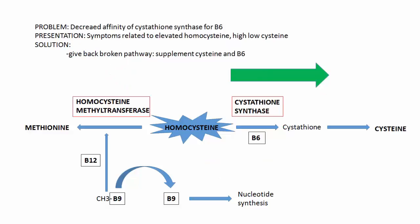In reality, the most common way this pathway is disrupted is not by lacking cystathionine synthase entirely, but by having a less efficient enzyme. While this is most common in the real world, it's actually the least common on boards because it's more nuanced. In this case, the enzyme just has less affinity for vitamin B6 so it doesn't work as efficiently, and the way to treat this is simply by giving more vitamin B6. Supplementing B6 brings the enzyme back up to functional status.